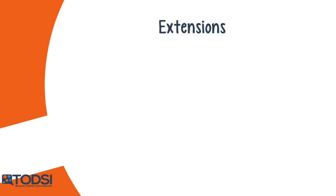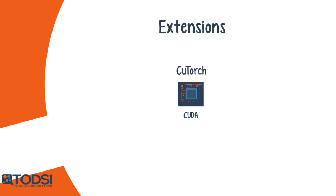Torch and its many extended libraries allow you to build just about every type of deep net that we've seen. But some libraries provide special features that could be useful for your project. For example, the CUDA library CuTorch provides GPU support, which is not included in the standard Torch library.